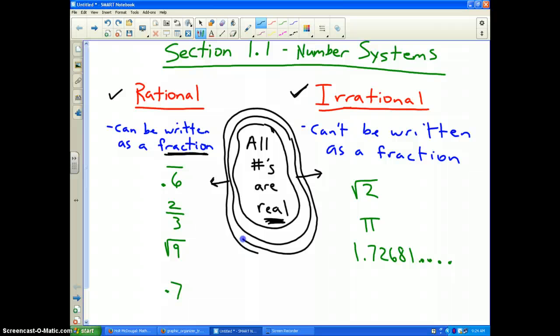And some examples that I wrote in green: 0.6 repeating is rational, 2 thirds is rational, the square root of 9 is rational, 0.7 is rational. Why? Because all four of those numbers can be written in fraction form.